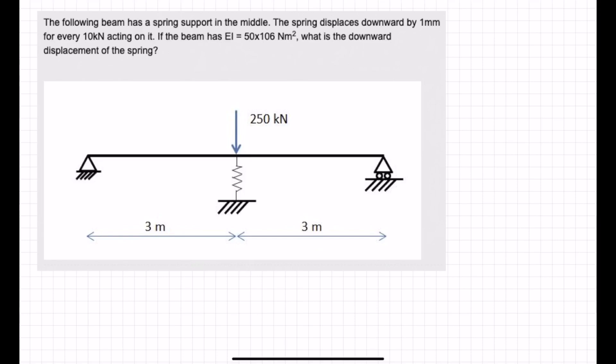Here we have a beam with a spring support in the middle. We are told that the spring has a stiffness of 1 millimetre every 10 kilonewtons acting on it. The beam has EI of 10 to the 6 Newton metre squared. What is the downward displacement of the spring?